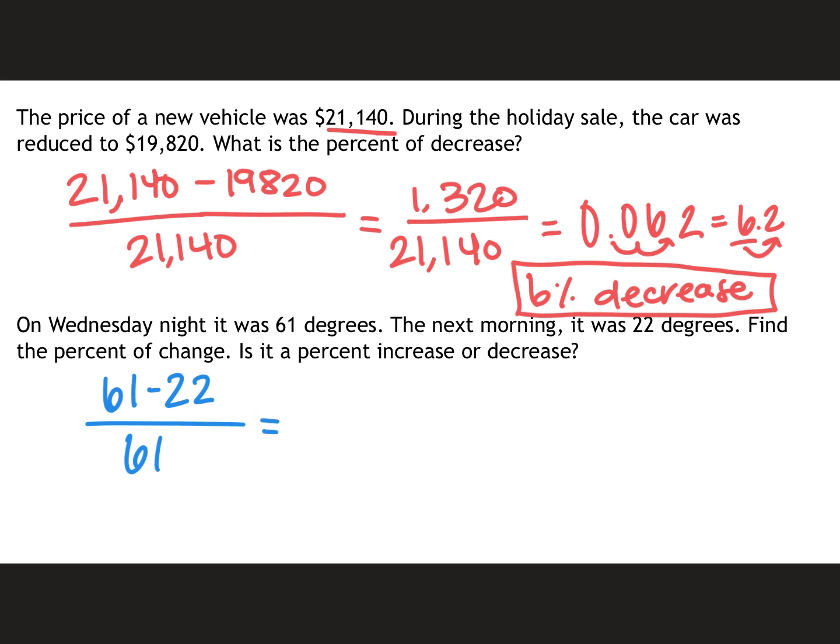So then when I go and subtract these, 61 minus 22 is 39. And then I'm going to divide that by 61. And I get this for an answer.